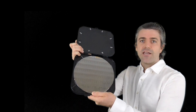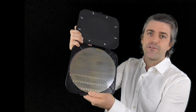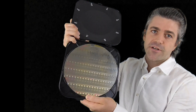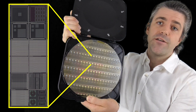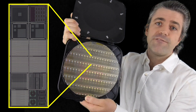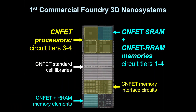We're also very excited that this work is now being transferred into high-volume commercial foundries. Here's a wafer that I'm holding in my hand right now. This is the first wafer fabricated inside a commercial foundry with multiple layers of circuits built out of carbon nanotube transistors, multiple layers of memory using resistive RAM, all fabricated directly on top of each other over the same starting substrate. These types of systems are impossible to build using today's silicon-based technologies.